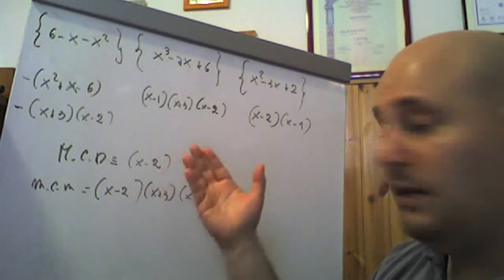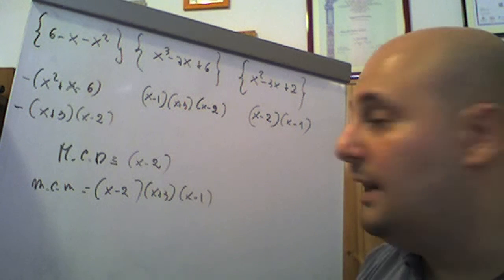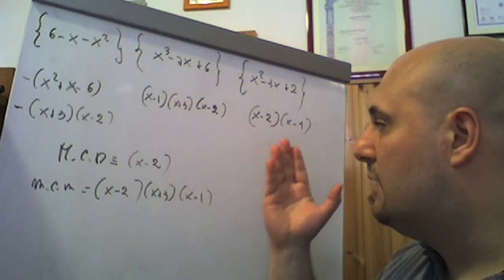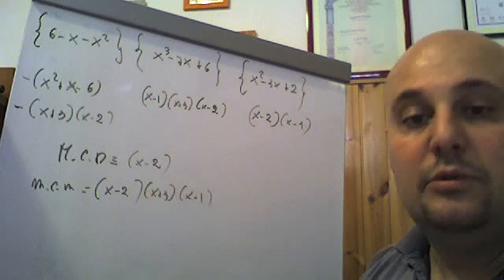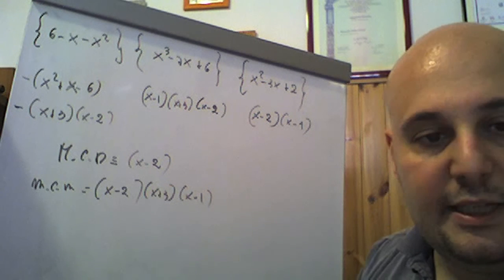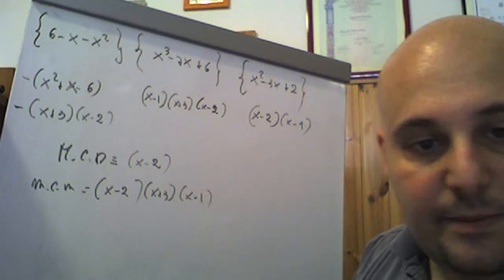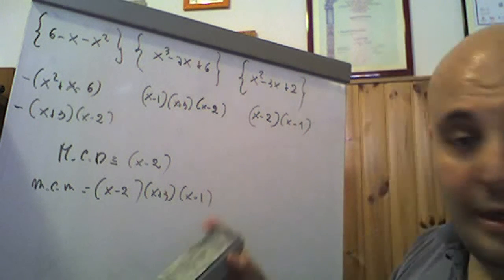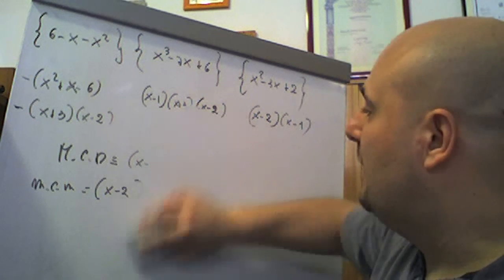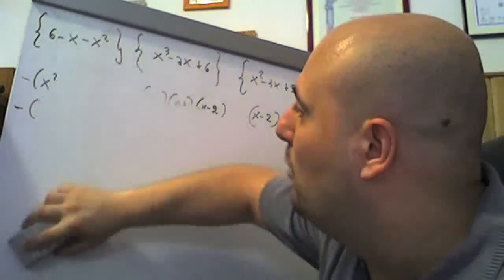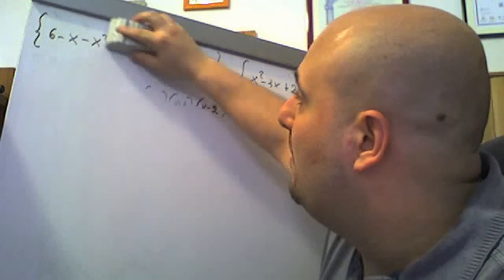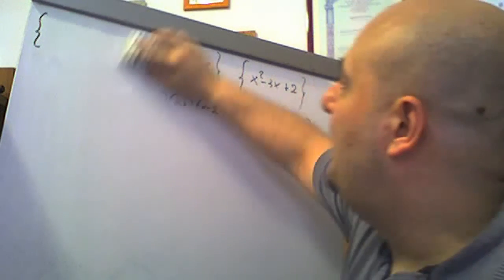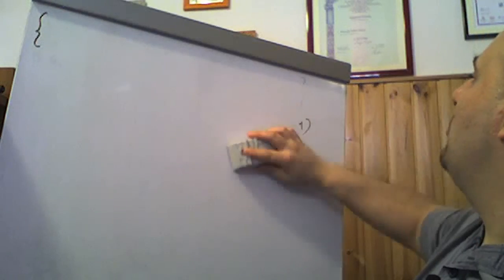Ricordo che dire x−2 o 2−x come massimo comune divisore è la stessa cosa; il segno meno non cambia assolutamente nulla nel risultato finale.